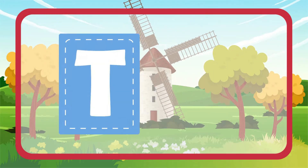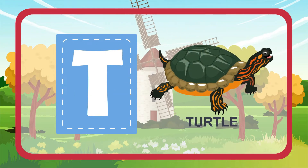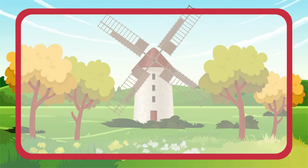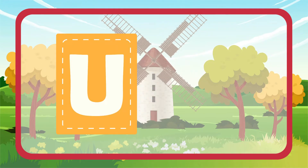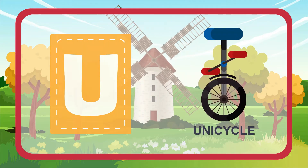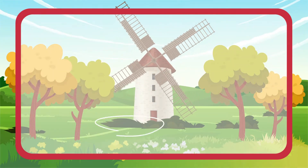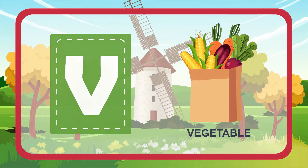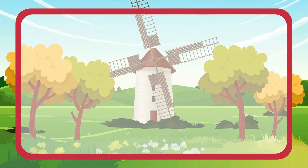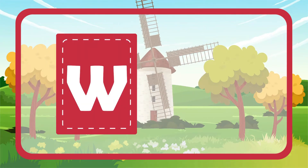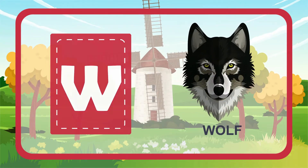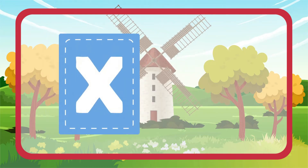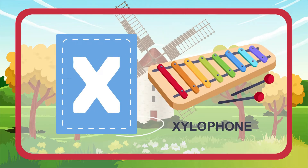T is for Turtle. U is for Unicycle. V is for Vegetable. W is for Wood. X is for Xylophone.